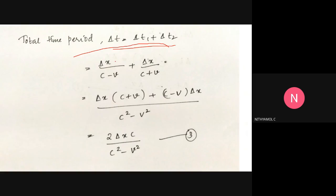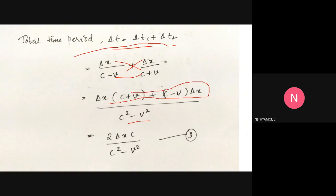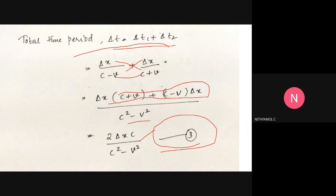Now we cross multiply to find the total time period. Delta t equals delta t1 plus delta t2, which is delta x/(c - v) plus delta x/(c + v). Cross multiplying, we get delta t equals 2*delta x*c divided by (c² - v²). This is equation number 3, the total time period.